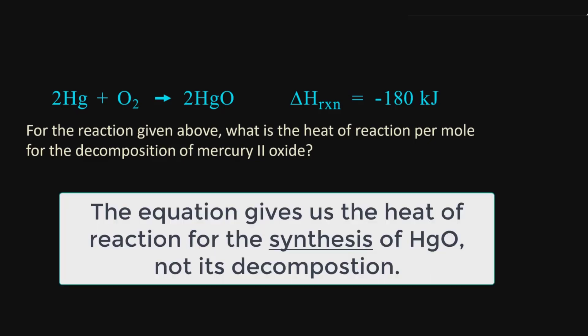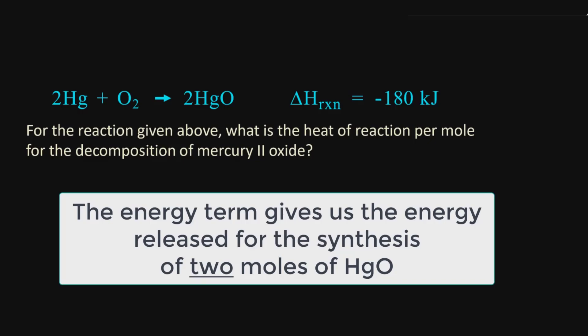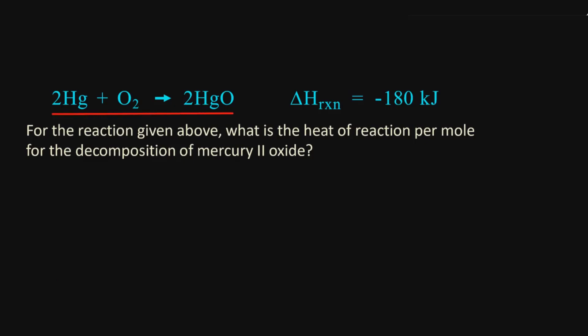The fact that the equation gives us the heat of reaction for the synthesis of mercury 2 oxide, not its decomposition. And two, the energy term gives us the energy released for the synthesis of 2 moles of HgO. So we need to reverse the given reaction to get the decomposition reaction.